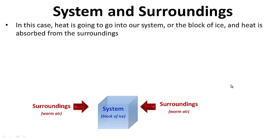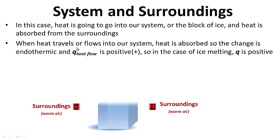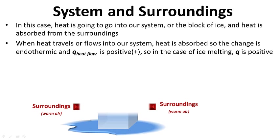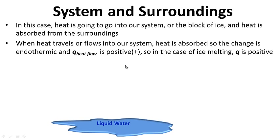In this case, heat is going to go into our system — the block of ice — and heat is absorbed from the surroundings. You can probably imagine what the block of ice is going to do if it's absorbing heat. When heat flows into the system, heat is absorbed, so the change is endothermic and Q is positive. Because the ice was gaining heat, Q was positive. In the case of ice melting, Q is positive.